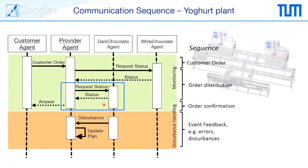It's not only in the case of ordering, distribution, and order confirmation. We can also use these messages in a faulty situation for event handling, for errors and disturbances — highlighted in the orange section. If, for example, the dark chocolate agent detects a disturbance, it sends a message to the provider agent and the whole plant must decide how to react, whether a reconfiguration is possible. Maybe the white chocolate agent could take over the dark chocolate process.